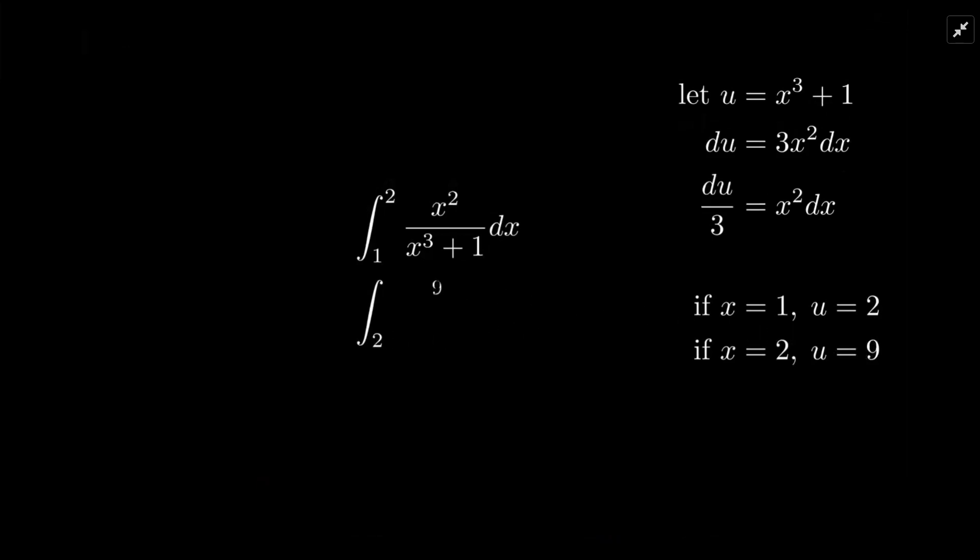There are the new limits. For x squared dx, we have du over 3, and then u in the denominator. And we just integrate that. We pull the one-third out and then evaluate from 2 to 9.